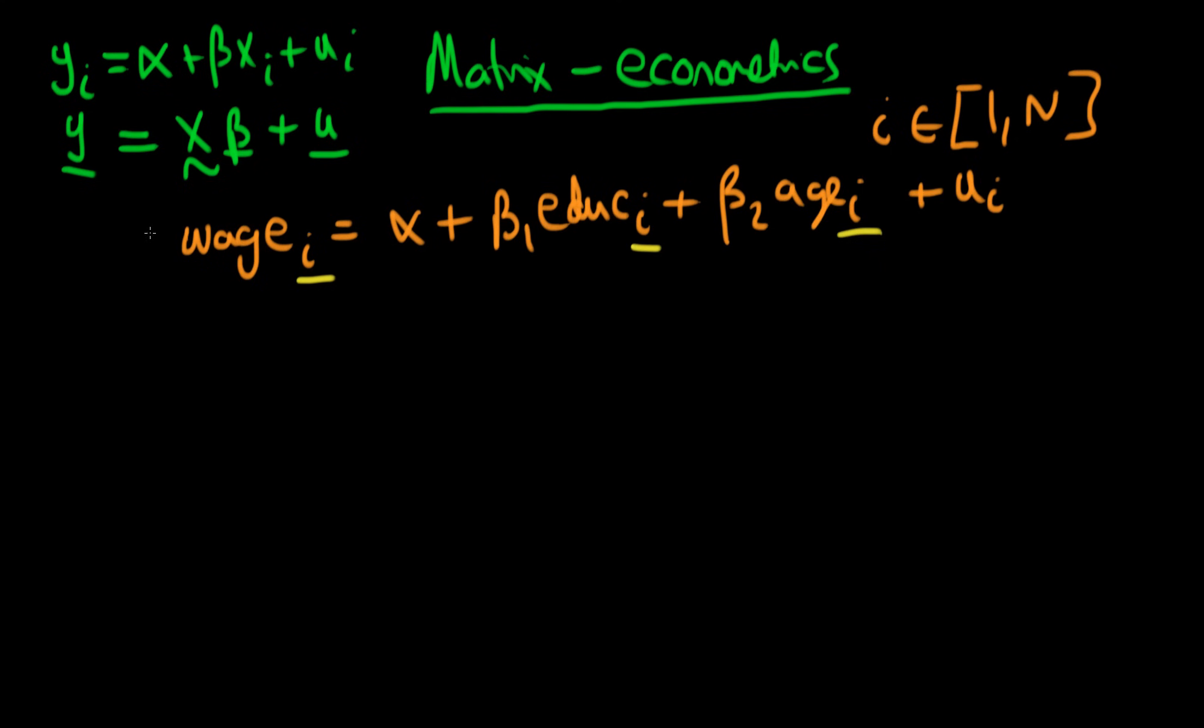This is just writing it out in the standard form which we have previously used to specify econometric relationships, but I wanted to see how we would go about formulating this in a matrix equation. So the idea here is that instead of writing out wage i, we can actually write out the wage for each of our n individuals.